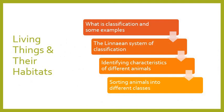That is the end of today's lesson. To summarize, we have looked at living things and their habitats, classification, the Linnaean system of classification, identifying characteristics, and sorting animals into different classes. Your quiz next week will be a 20-question quiz — a mix of easy multiple choice, some matching up, and a few longer questions where you'll write a sentence or two. All of the answers you need are in this video. Thank you for watching.